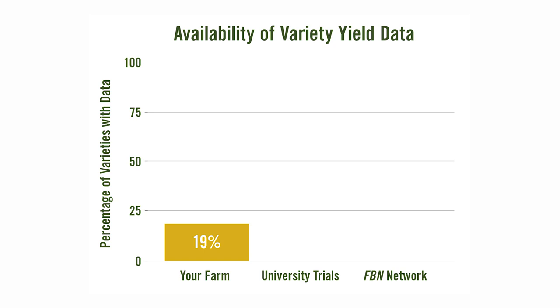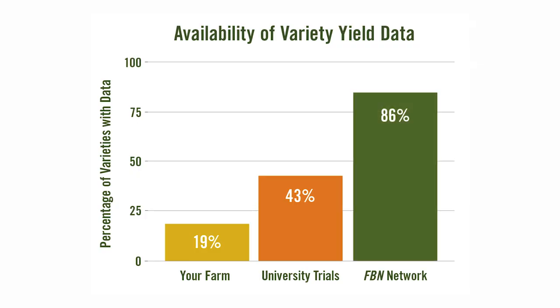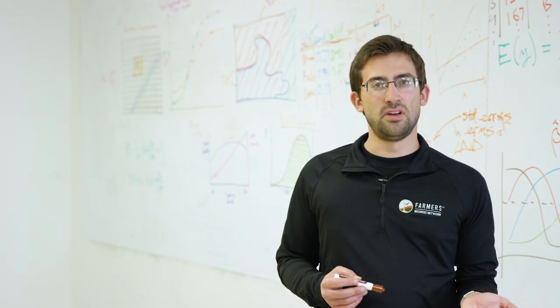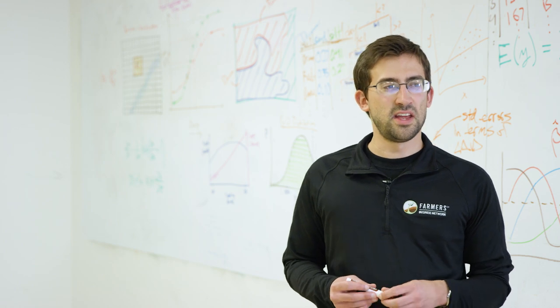We calculated the percentage of varieties on the market that have data from each of these three sources. If you only look at data from your own farm, on average that only covers at most 20 percent of the varieties on the market. University trial data gives much better variety coverage, but you're still missing a lot. In contrast, with FBN data we've observed nearly 90 percent of the varieties on the market, giving you greater confidence that you're picking the best one and not missing out on a better one.